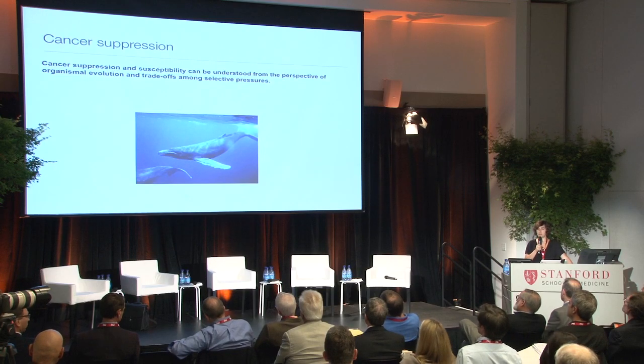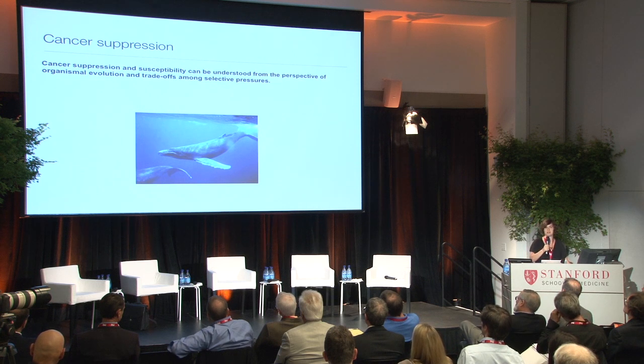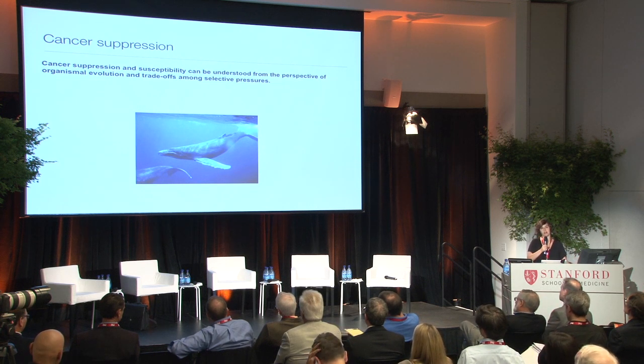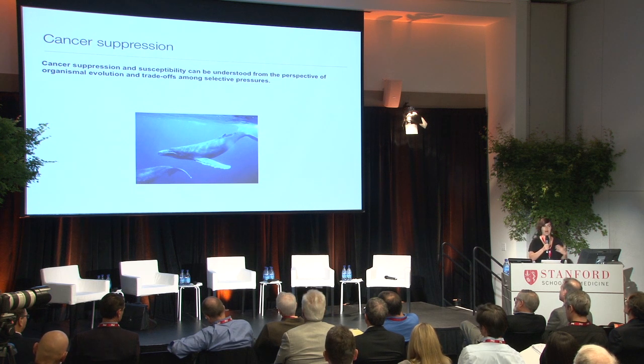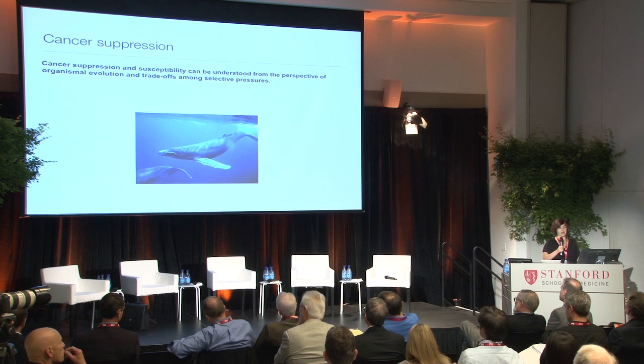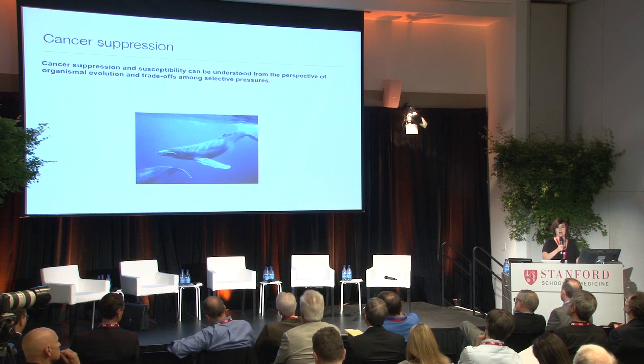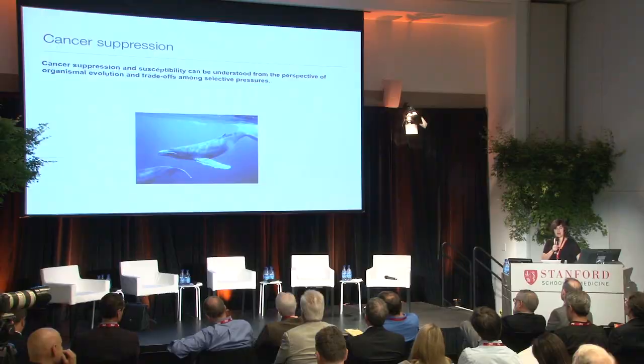Cancer suppression is a complex problem, but it's one that organisms have had to solve since the dawn of multicellularity. In order to create a multicellular body, you have to suppress the proliferation of individual cells. So if we consider the wider problem of how organisms create and maintain multicellular bodies, that may give us some insights into how humans suppress cancer. Carlo has a few projects on that — I encourage you to ask him what Peto's paradox is, if you want to have an interesting conversation.